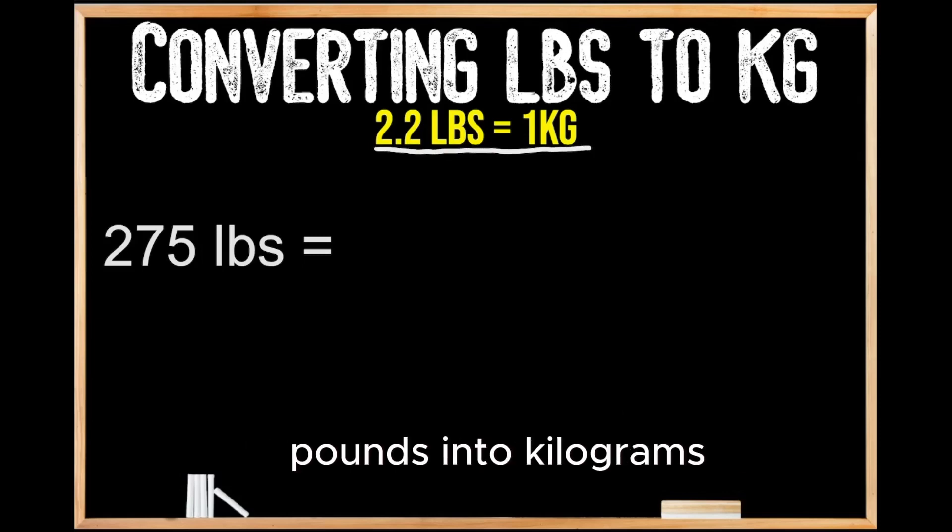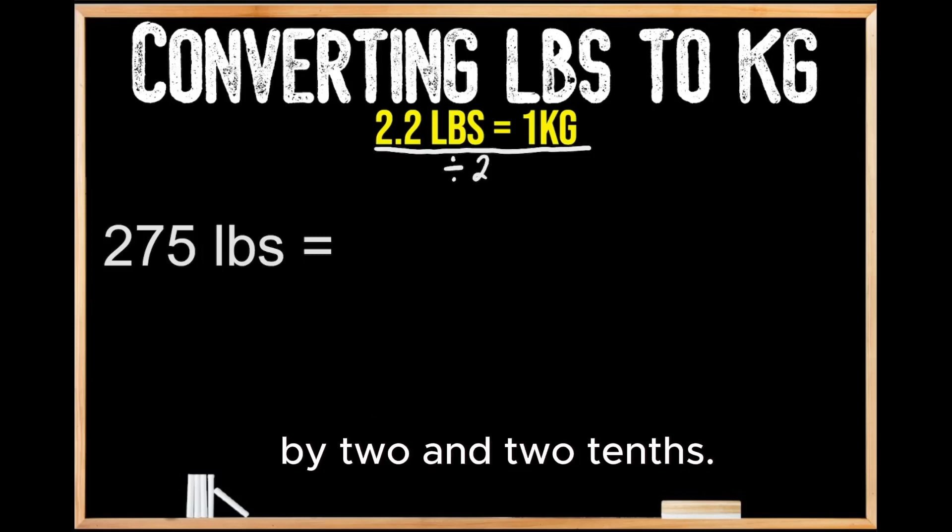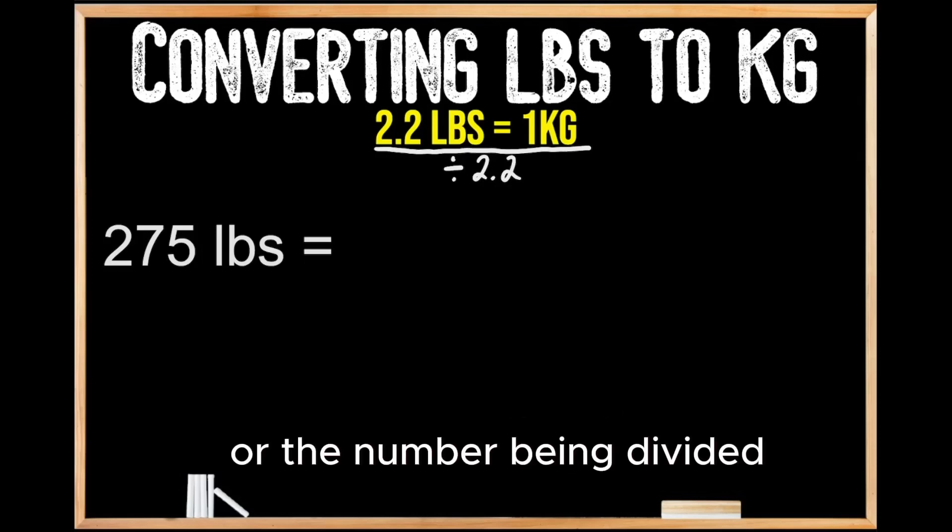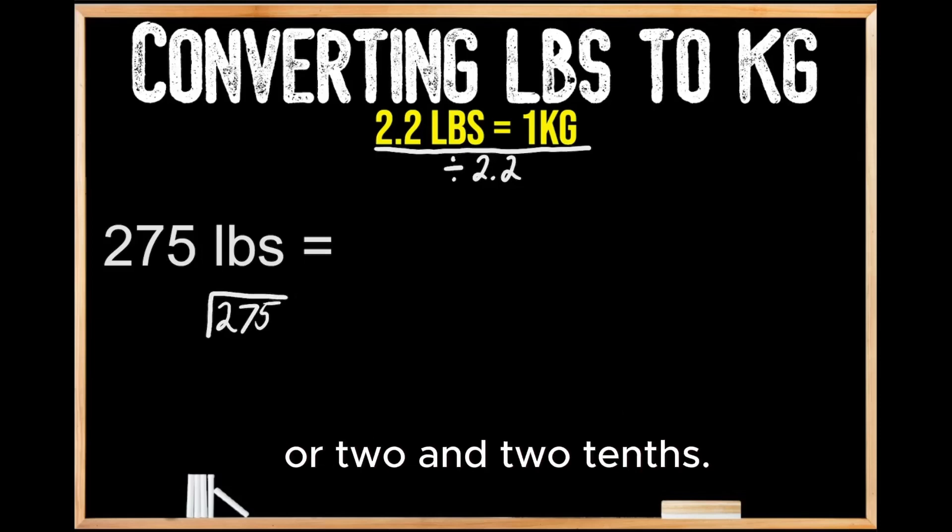So when we're converting pounds into kilograms, we're going to divide the value of our pounds by 2.2. Let's set up this division problem. Our dividend, or the number being divided, is our value of pounds, so we have 275 pounds, which is being divided by our divisor, 2.2.